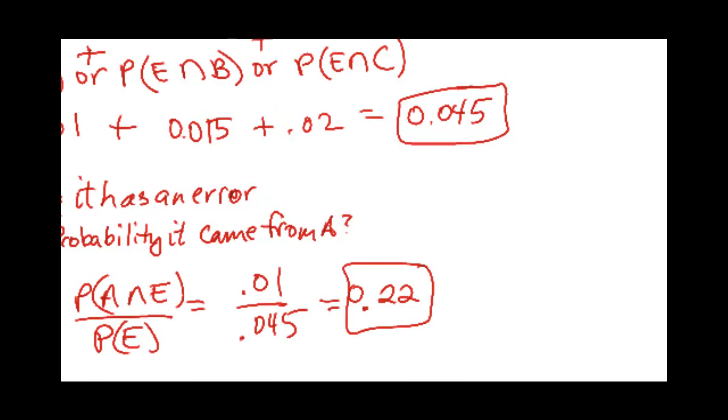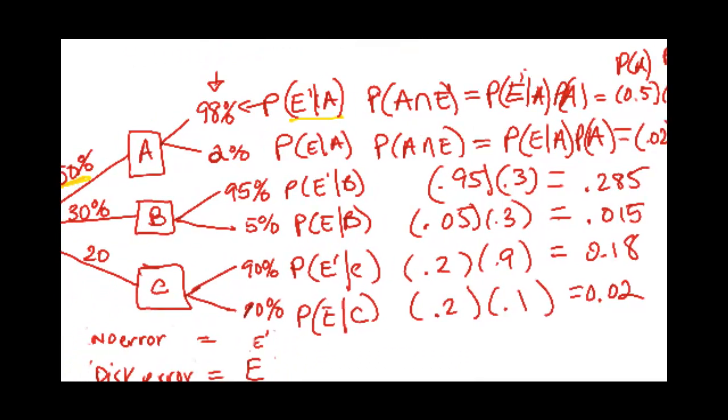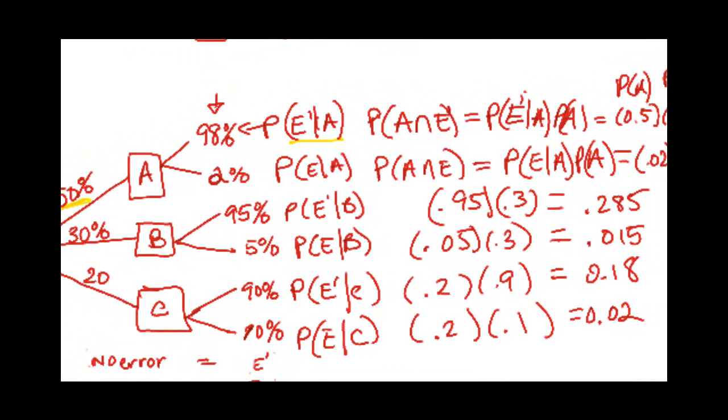All right? So recapping, make sure that you know that the last row of a factor tree is always a conditional probability.